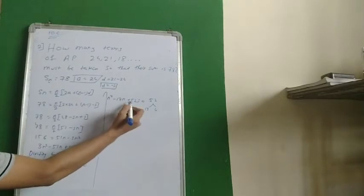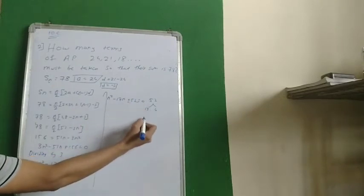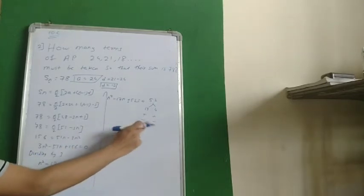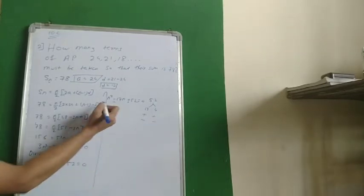And as it is addition, we have both the signs same. Both are plus or both are minus. Both the signs are plus or both the signs are minus depends upon the middle term. The middle term is minus.